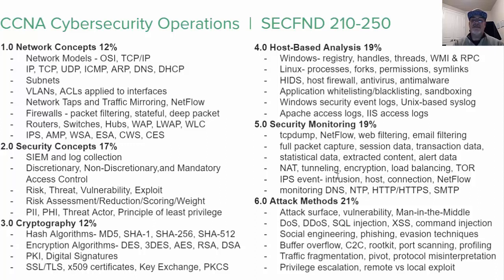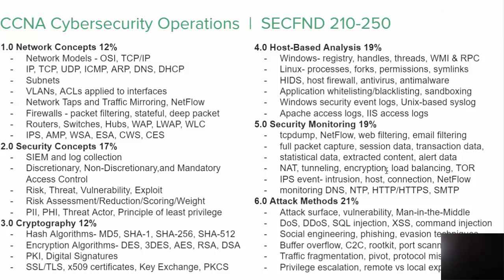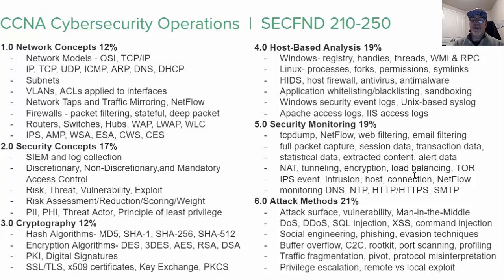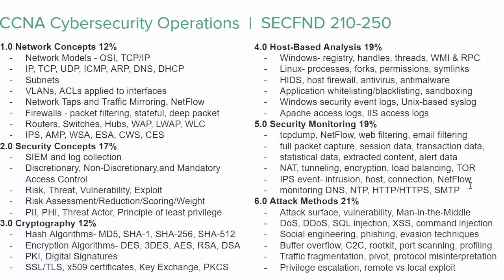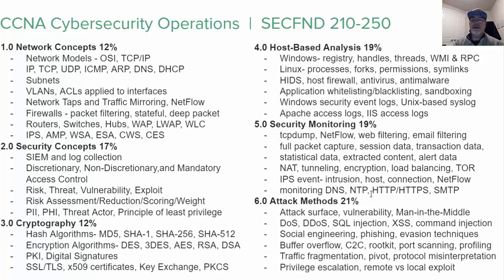Alert data comes from an intrusion detection or prevention system. You also need to know how security monitoring is affected by technologies like a NAT firewall that changes addressing, tunneling that hides addresses, encryption that hides packet data, load balancers that split connections, and the challenges posed by Tor networks and peer-to-peer networks. You should know how to identify different IPS/IDS event types — intrusion events, host events, connection events — and how to track NetFlow conversations and monitor DNS, NTP, HTTP, HTTPS, and SMTP.